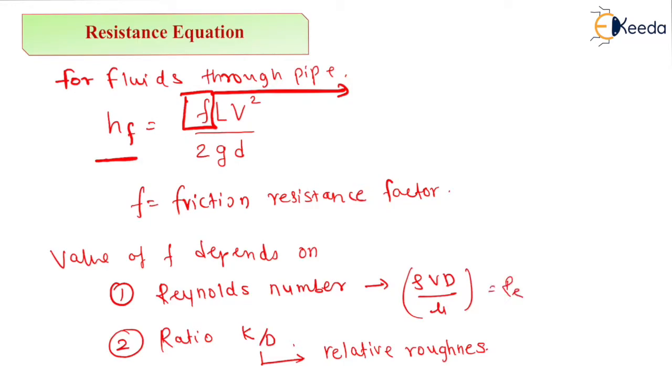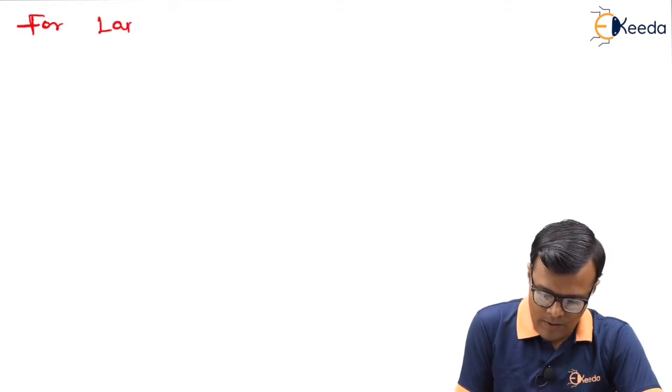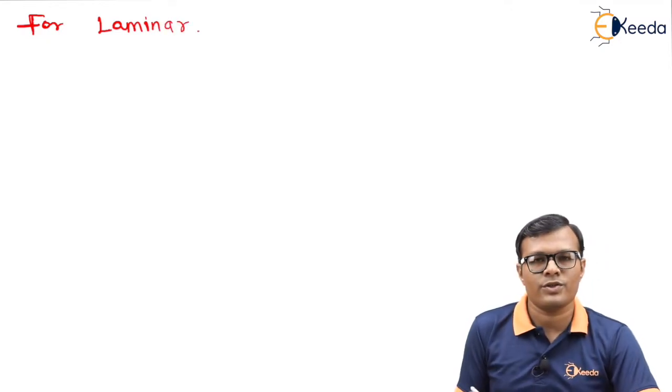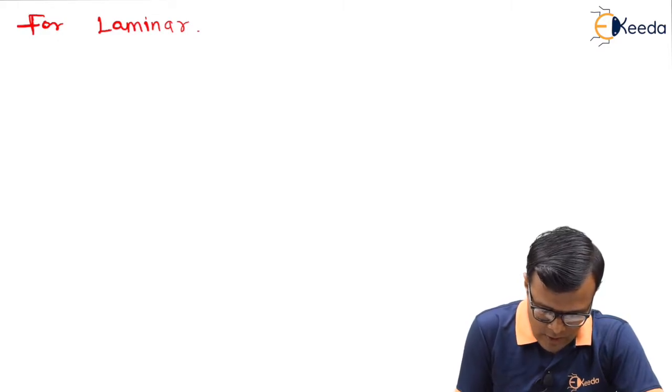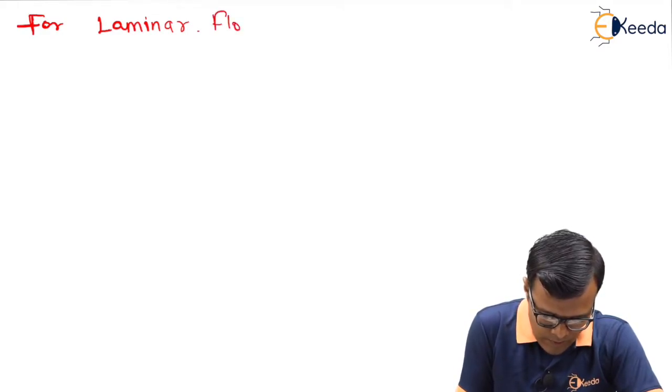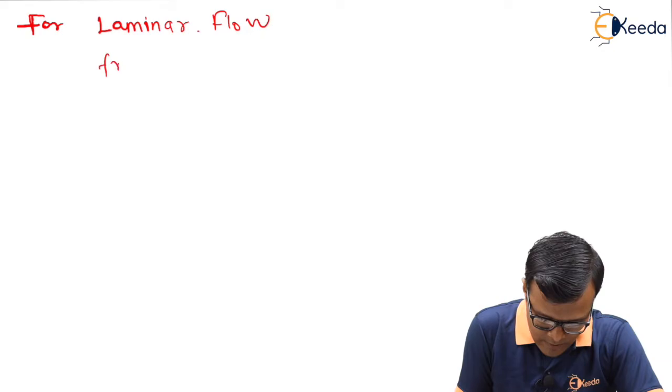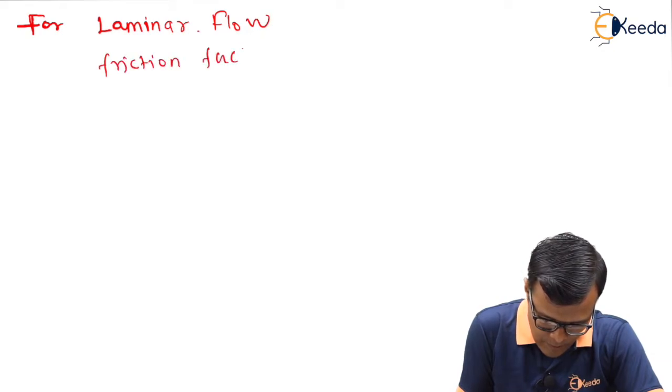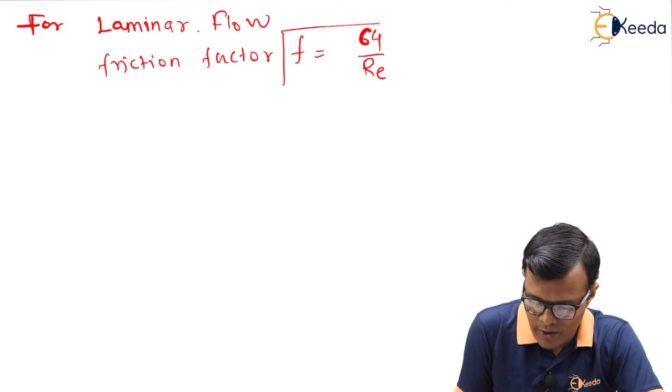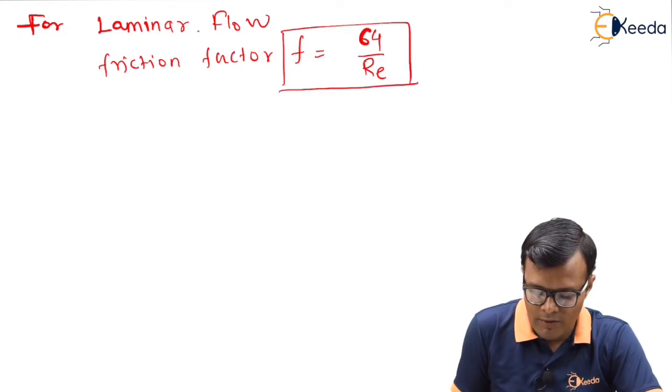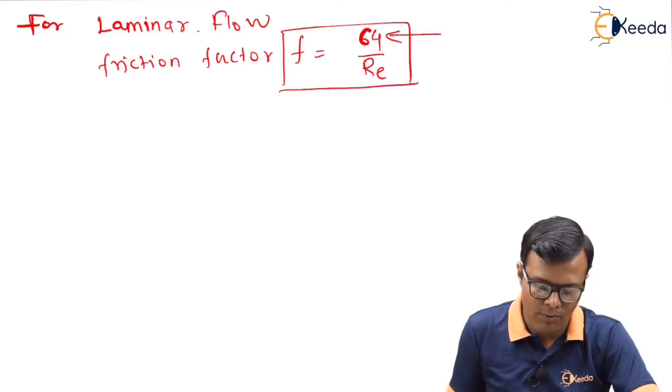So we will calculate the values for laminar flow. Now we are going to see some ready available formulae for the calculation of friction factor. For laminar flow, friction factor F can be calculated as 64 upon Re. This formula we have seen already in a derivation in which we have obtained this relation 64 upon Re.